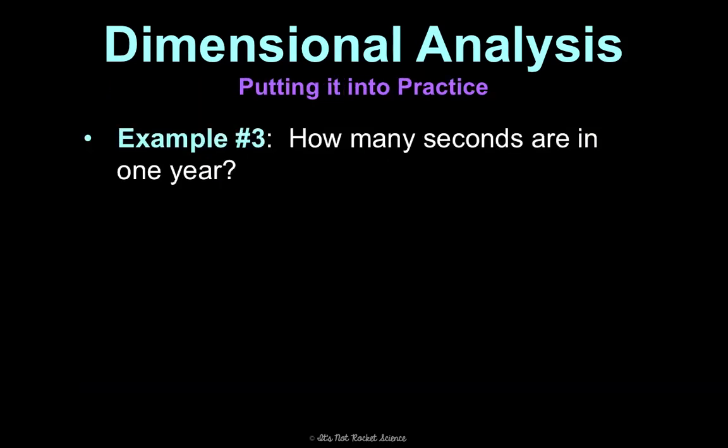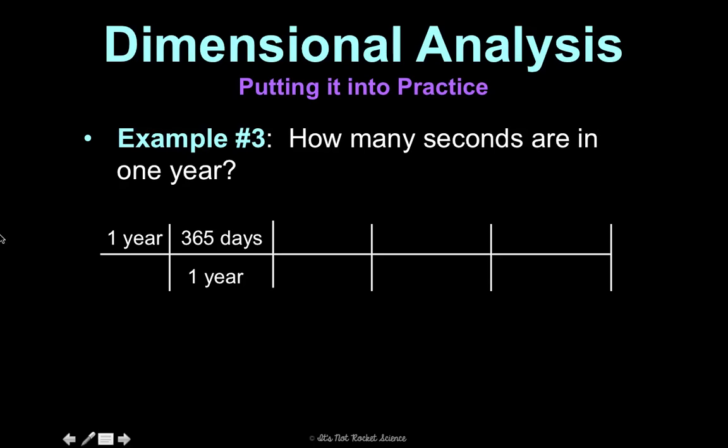So let's start off with one that you probably know these conversion factors in your head already. How many seconds are in one year? So first, what do we know? We know one year. Step two, draw your picket fence. Step three. I don't know how many seconds are in a year. But I do know that there's 365 days, usually, if it's not a leap year, in a year. So one year is 365 days. Now, why did I put it this way instead of the opposite? Well, I want the year units opposite of each other.